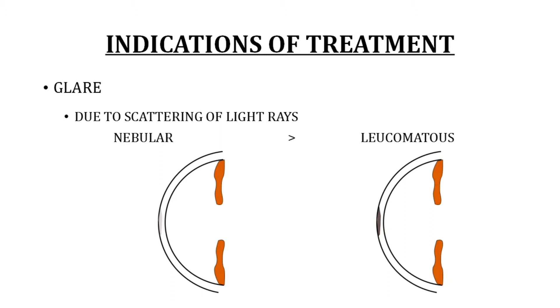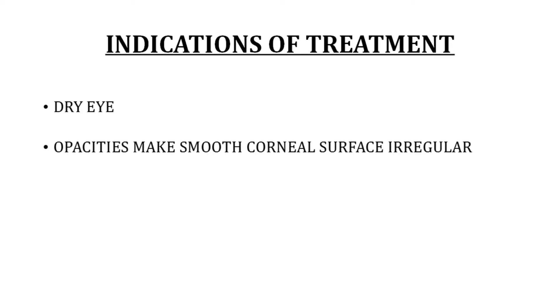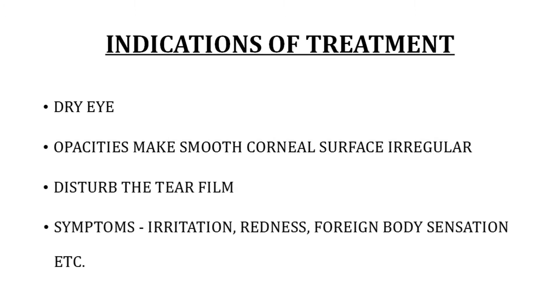This is because leucomatous corneal opacities simply block rays of light instead of scattering them, while nebular corneal opacities allow rays of light to pass through but cause them to scatter. Corneal opacity also causes dry eye symptoms because it makes the smooth corneal surface irregular, disturbing the tear film and causing symptoms like irritation, redness, foreign body sensation, etc.